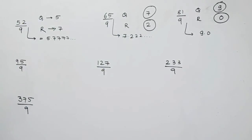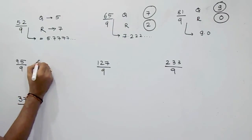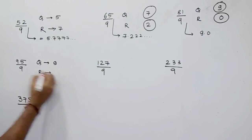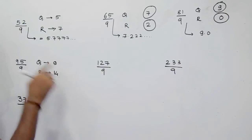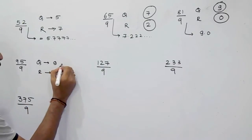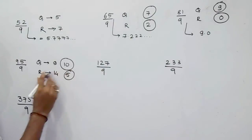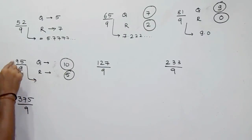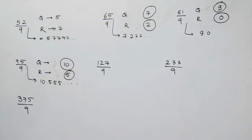Now 95 divided by 9. For the quotient, write 9 as it is. For the remainder, 9 plus 5 is 14. Now 14 is greater than 9, so increase the quotient by 1 — it becomes 10. For the remainder, 14 minus 9 is 5. So the remainder is 5 and the quotient is 10. The answer is 95 divided by 9 equals 10.555 and so on.